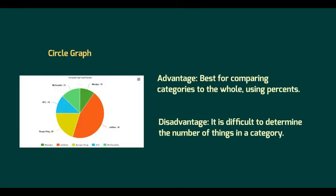Look at our circle graph. As you can see in the circle graph, we're comparing the favorite types of fast food and the percentages of what people would pick. So the advantage here is that it's the best for comparing categories to the whole using percents.